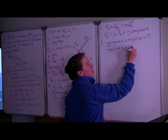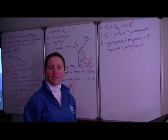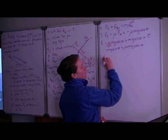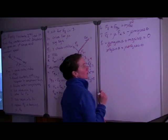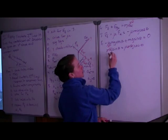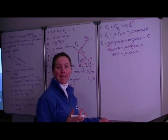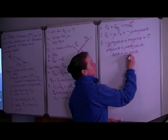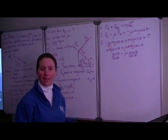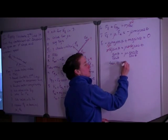Working symbolically before substituting values shows its advantage here. Dividing through by mass — mass cancels. Dividing through by gravitational acceleration — that also cancels. We're left with sin θ equals mu cos θ. Dividing both sides by cos θ gives sin θ over cos θ equals mu. Since sine over cosine is tangent, we get: tangent of θ equals mu.